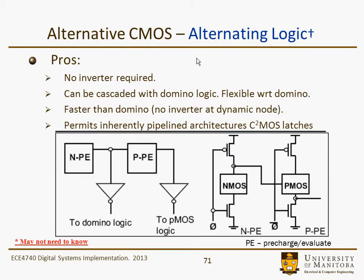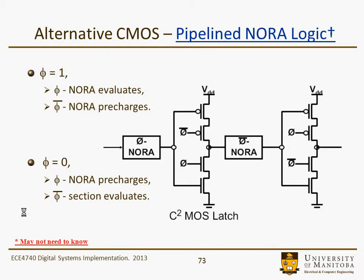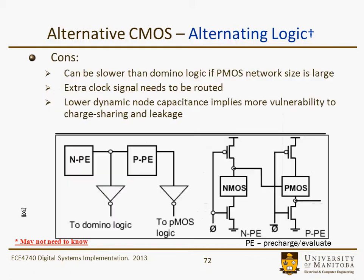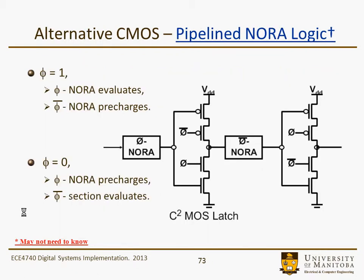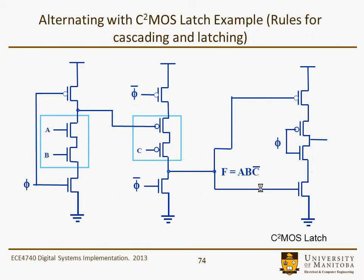Here's where it gets more interesting, with some alternating logic similar to before — we have an N-type pre-charge evaluate and a P-type pre-charge evaluate. Here's an example called a pipeline NORA stage. The idea is adding a C-squared MOS latch to a NORA logic block. This is evaluated on phi, and the P-type logic block is evaluated on phi-bar, with rules for cascading and latching.